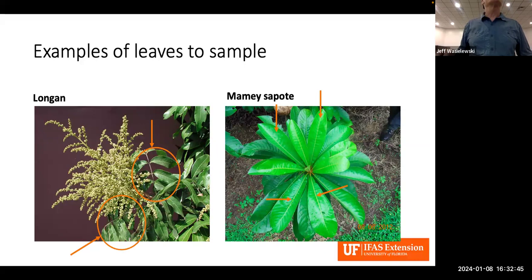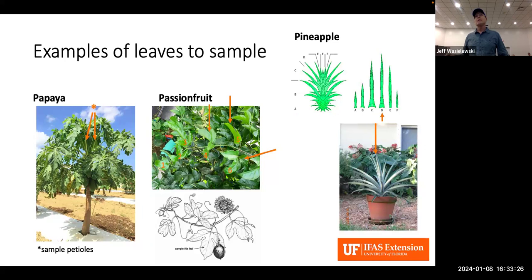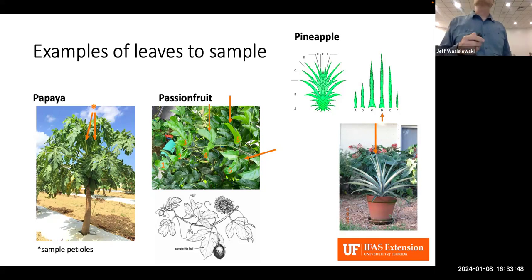For longan, you select behind the panicle — the whole compound leaf, not individual leaflets. For mamey, the most recently matured leaves are each a single leaf. For papaya, you're sampling the most recently matured leaves but only using the petioles. For passion fruit, it's about the sixth leaf back. For pineapple, you sample what's called the D leaf — the most recently matured center leaf, larger than the inner leaves, the first one once you get away from the smaller leaves.